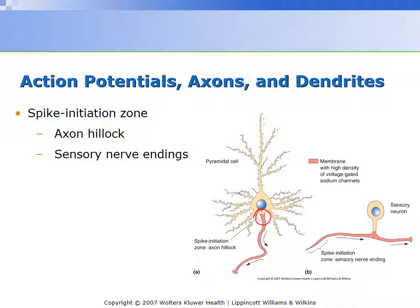This depolarization of dendrites — the synaptic input from other neurons — leads to the generation of an action potential in the axon hillock. On the other hand, in sensory neurons, the action potential is not generated from the axon hillock. Rather, it generates at the sensory nerve endings, which in turn leads to sensory stimulation. That generation of action potential then further propagates along the axon and further stimulates either an interneuronal response, as we've discussed, or it propagates to the brain to be interpreted as pain.